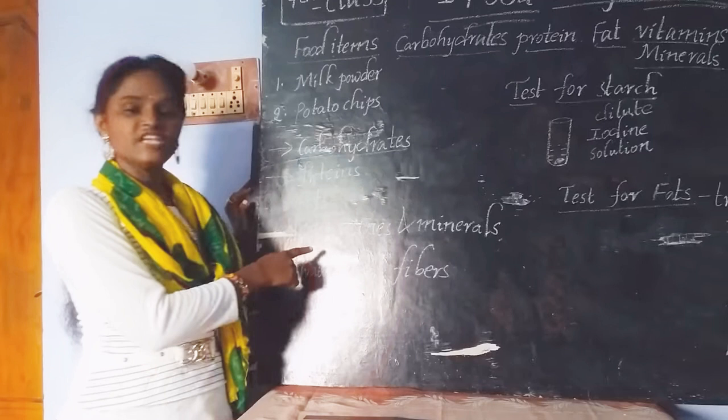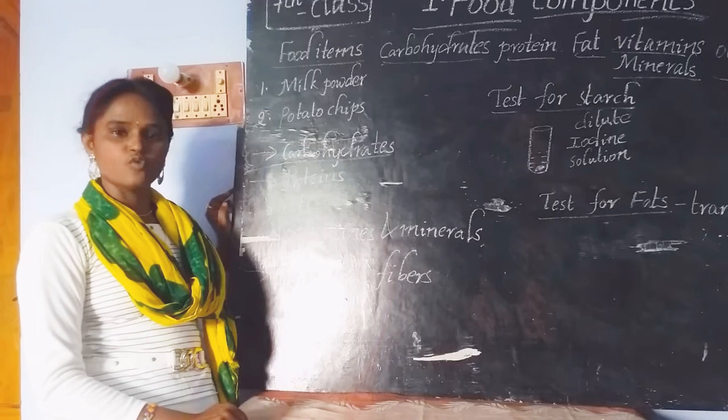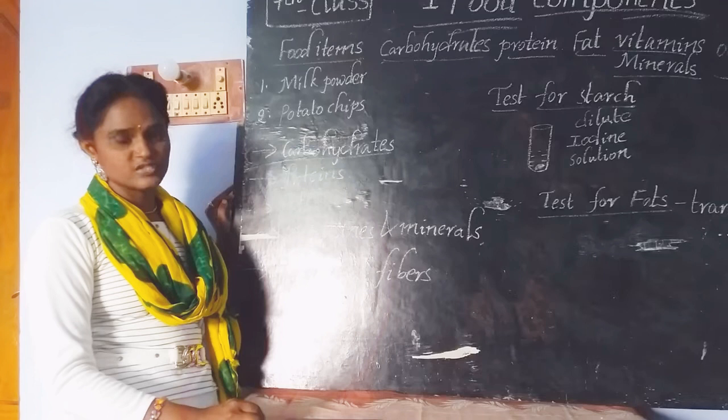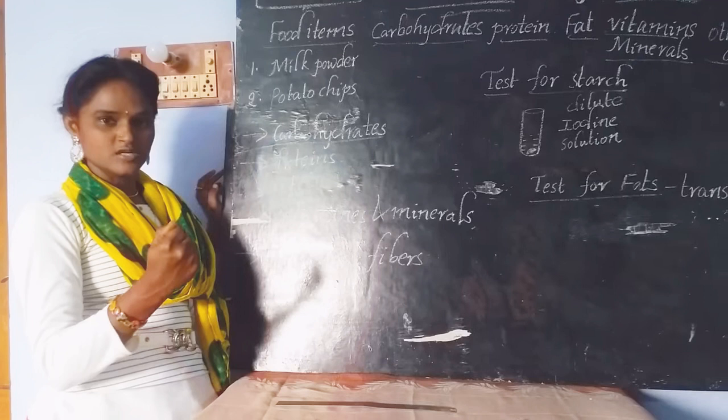Fats are also called energy-giving food, like carbohydrates. If we talk about vitamins and minerals, these are protective foods — they protect our body from different varieties of diseases. If you want to be healthy, then you have to add more varieties of fruits and fresh vegetables so that more vitamins and minerals are added to your diet, keeping you healthy and protected from different varieties of germs.